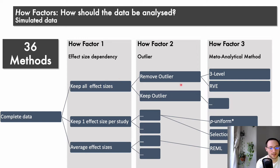We could also handle outliers in a different way. We could either remove them or we could keep them. And then there are different meta-analytical methods that we could use. For example, when we kept all effect sizes, we could use a three-level model or robust variance estimation. If we only kept one effect size per study, we could use p-uniform or selection models. Or if we averaged our effect sizes, we could use a random effects model. And there are many, many more. But in our example, we have 36 different methods that could be used.